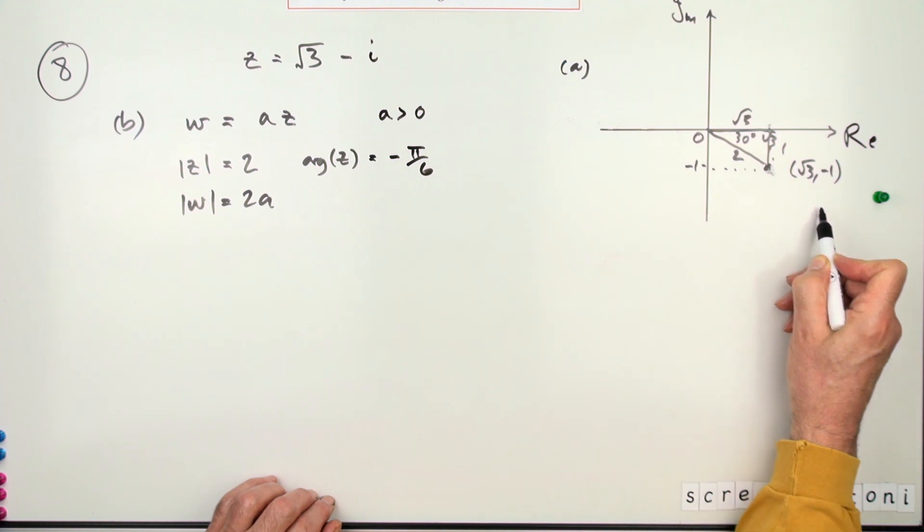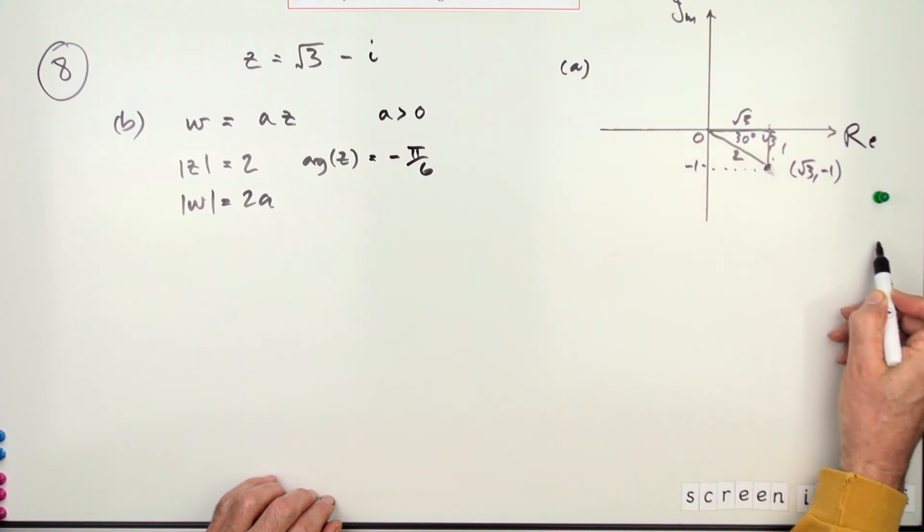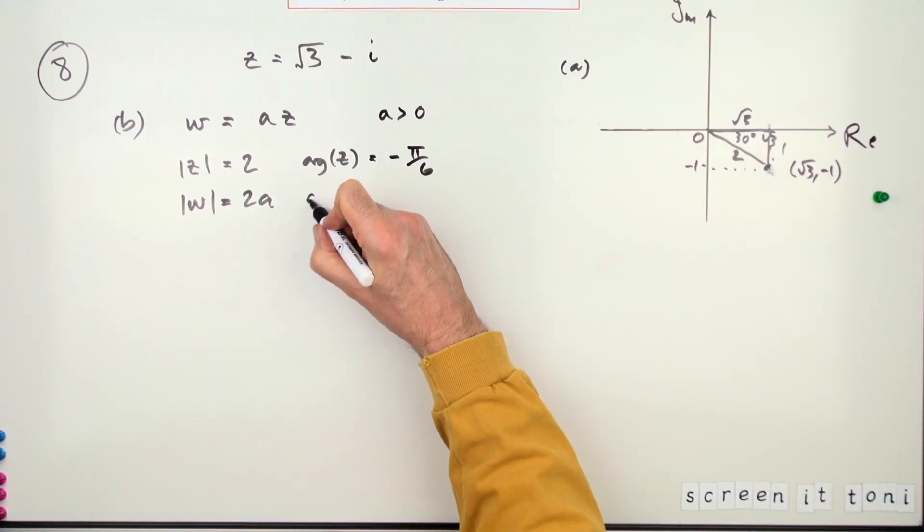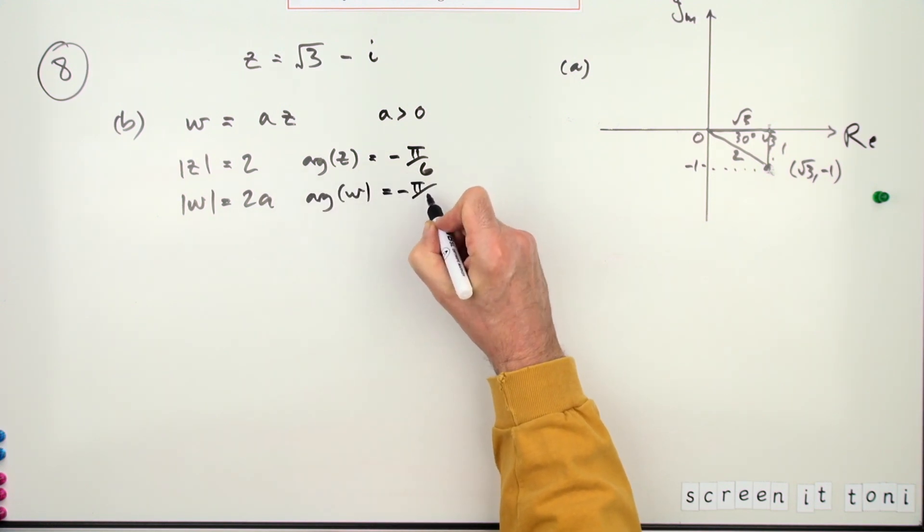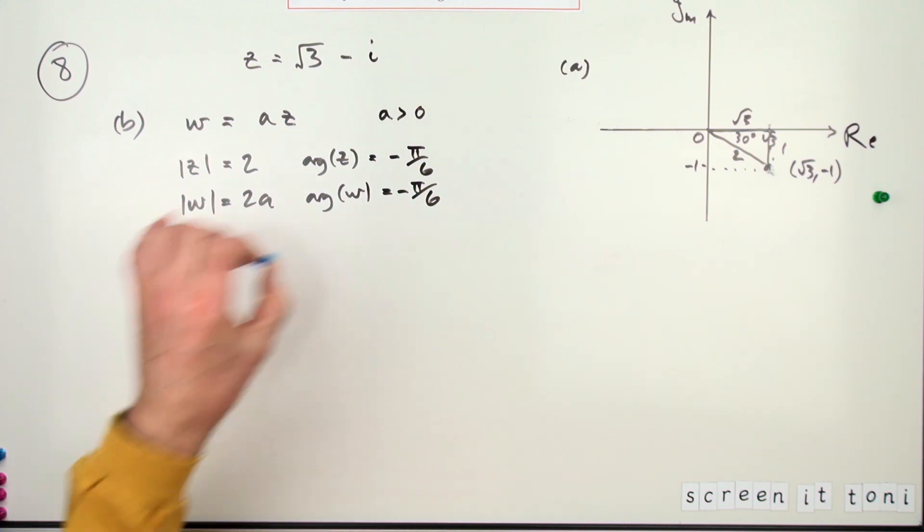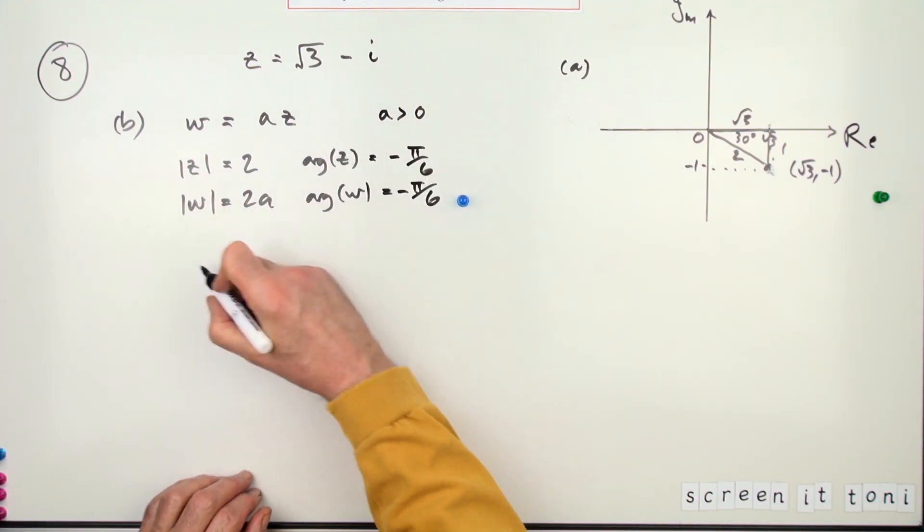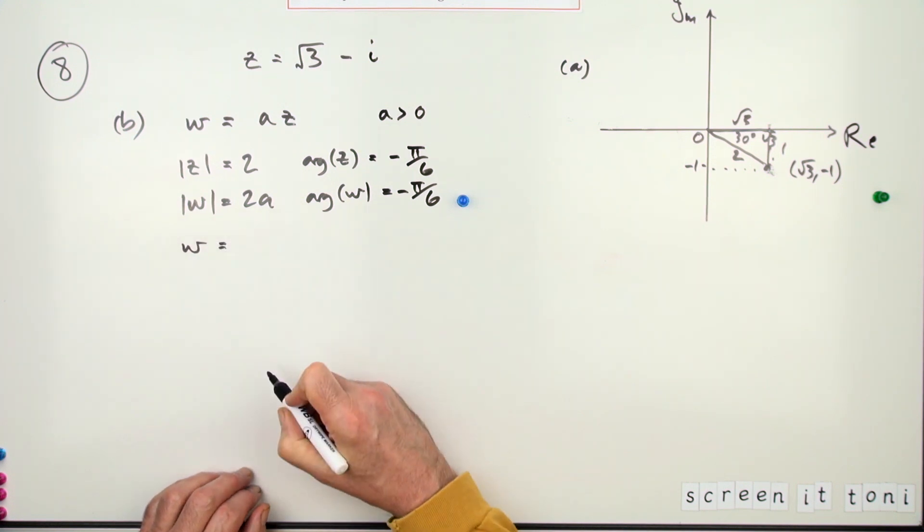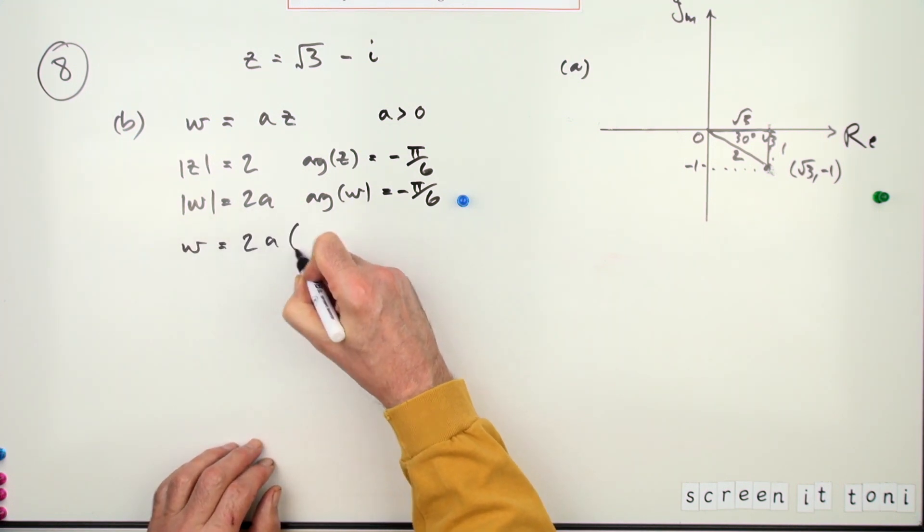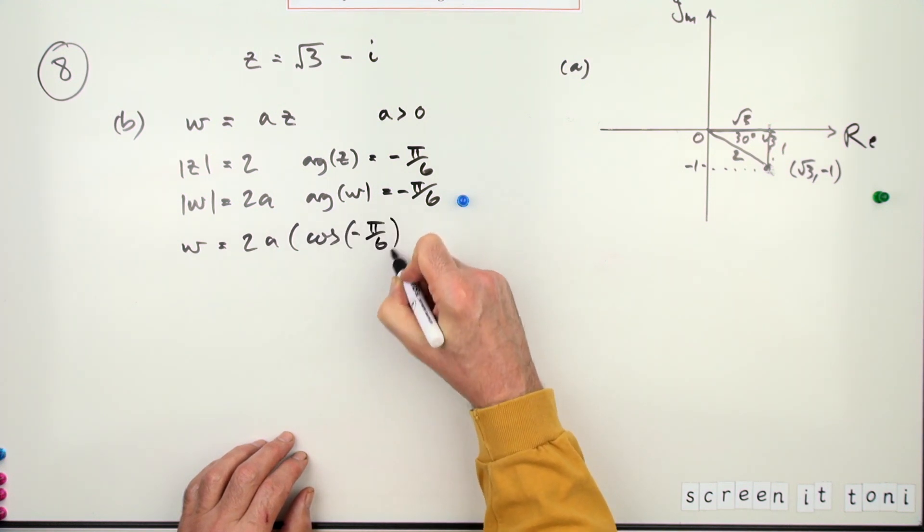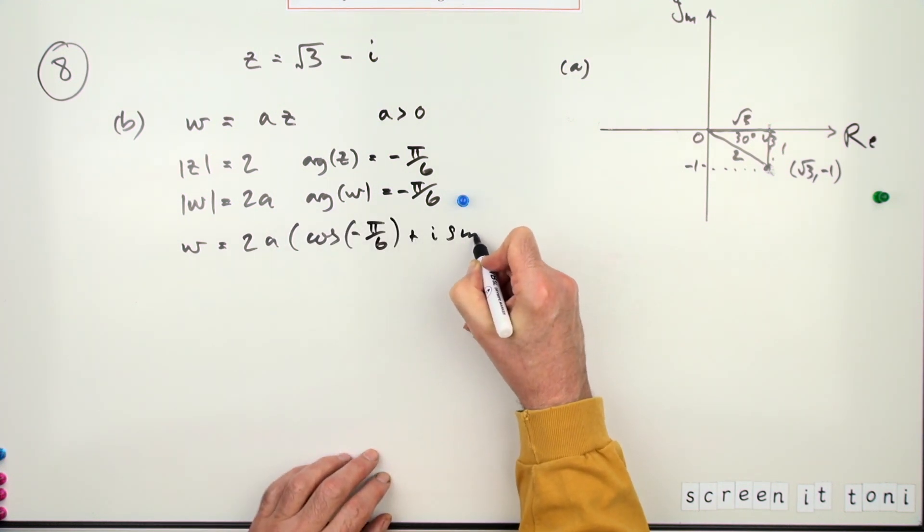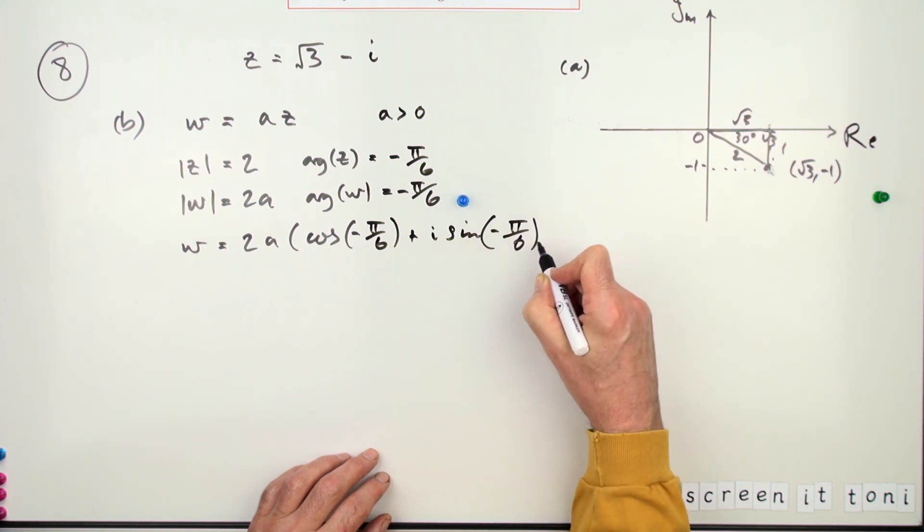I'll write it again here: argument of w will again be negative π upon six. Getting that's worth a mark. And then you get the other mark just for writing it out. So what is w? It's going to be—well, it was 2a times, and then it's just cos(−π/6) + i·sin(−π/6).